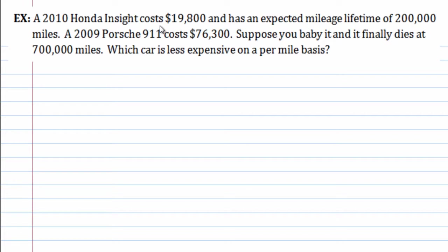So, let's go ahead and start this part with just like a ratio comparison. A 2010 Honda Insight cost $19,800. Now, that's a rough approximation, probably actually not very true anymore, and has an expected mileage lifetime of 200,000 miles. A 2009 Porsche 911 cost $76,300. Suppose you baby it, and it finally dies at 700,000 miles. Which car is less expensive on a per mile basis?